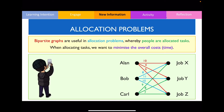Bipartite graphs are extremely useful in allocation problems whereby people are allocated to do a certain task. When allocating tasks, our overall objective is to minimise the overall cost by optimising a task and giving it to a certain individual. For example, each worker could perform each of three jobs, but the most optimised route is giving Alan job Y, Bob job X, and Carl job Z, completing all three jobs in the lowest time possible.